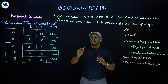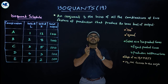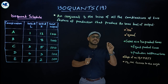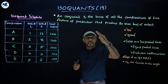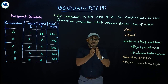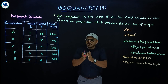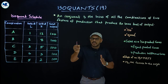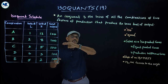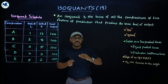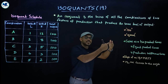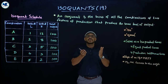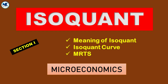In microeconomics, we already discussed indifference curve related to consumers' equilibrium and utility. The concept of isoquants is similar to indifference curves. In indifference curve, we deal with consumers' equilibrium and utility, whereas in isoquants, we deal with quantity and output, which is related to producer's equilibrium. Let us start our discussion with a simple definition of isoquant.